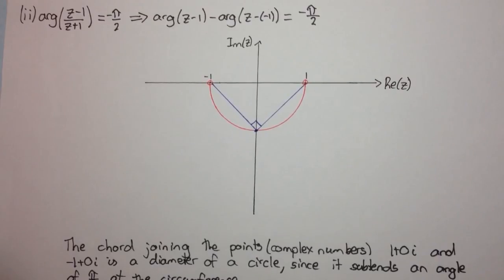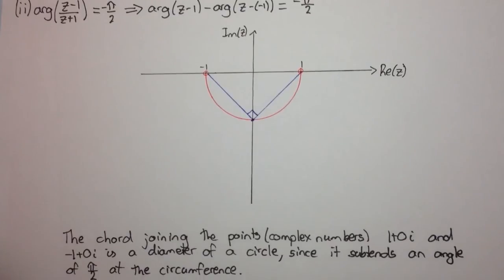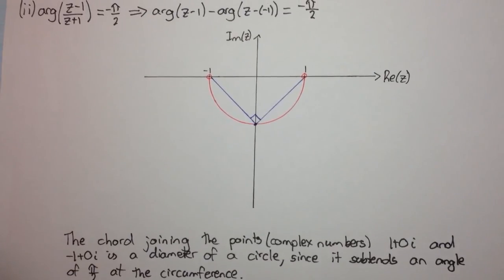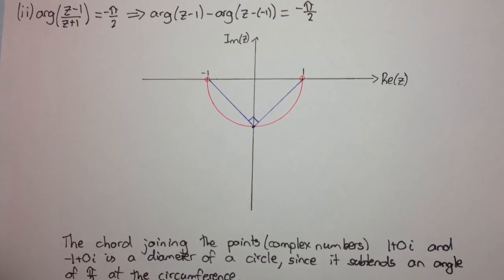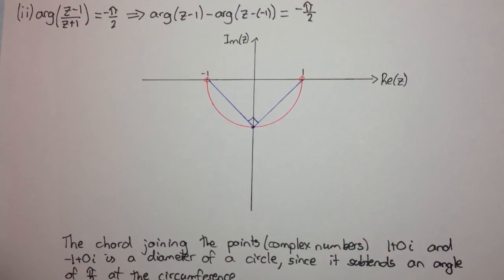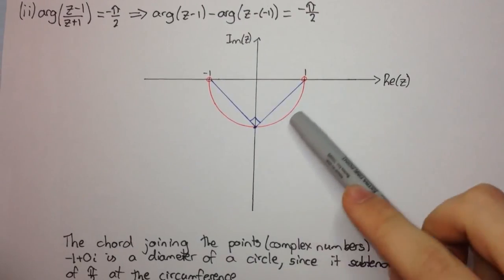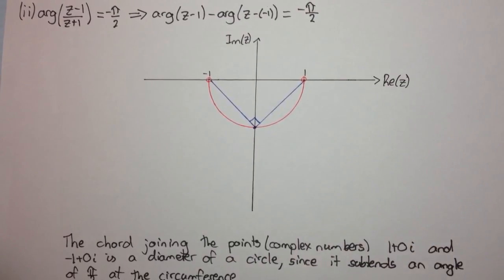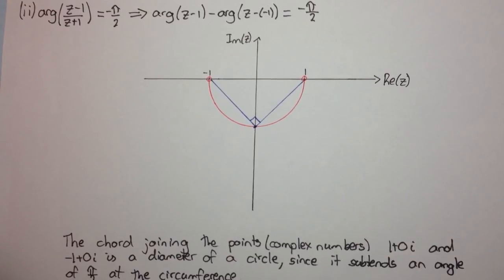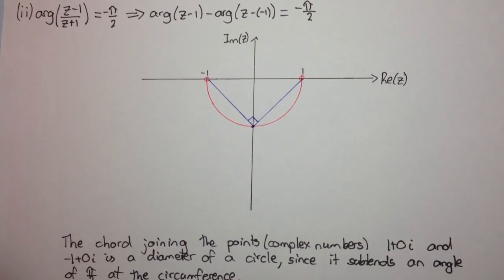That's how you solve these locus problems using a geometric approach. In the next video, I'm going to show you just the first part — the case where alpha was pi on 4 — using an algebraic approach, so you know how to get to the Cartesian equation of the locus of your point z. Thanks for watching the video and I hope you learned something.